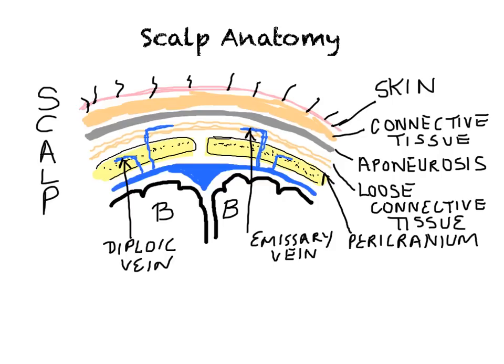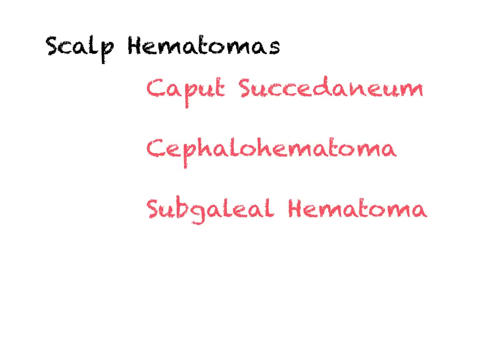Armed with the knowledge of scalp anatomy, it should be easy to understand the three different types of scalp hematomas that occur in neonates. These include the caput succidaneum, the cephalohematoma, and the subgaleal hematoma.